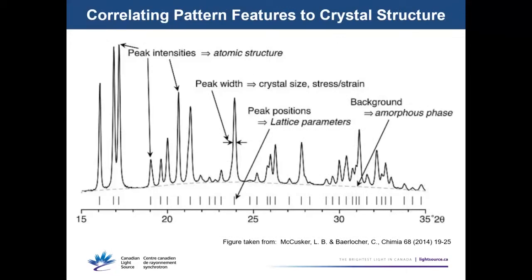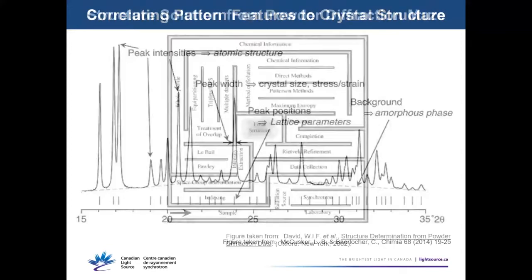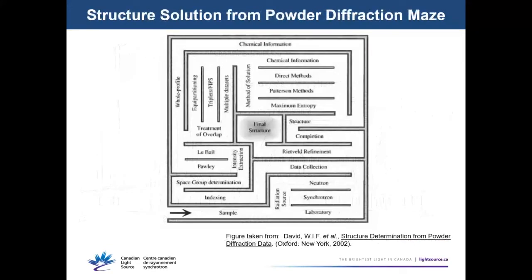When you simplify it, peak positions tell you what kind of unit cell you have and its symmetry, while peak intensities tell you where the atoms are placed within the unit cell. Generally, the narrower the peak width in your pattern, the easier it is to extract both accurate peak positions and intensities. That's one of the big reasons why the synchrotron is so useful — you can often resolve details you simply can't see with a lab instrument.